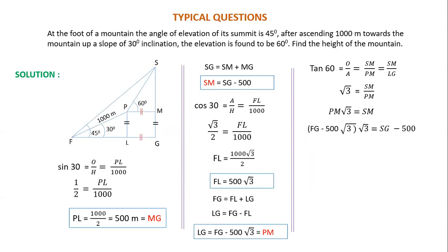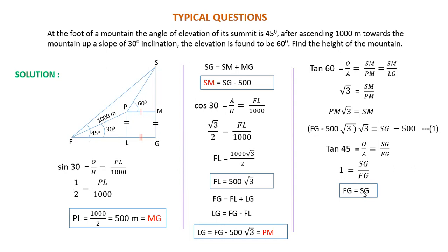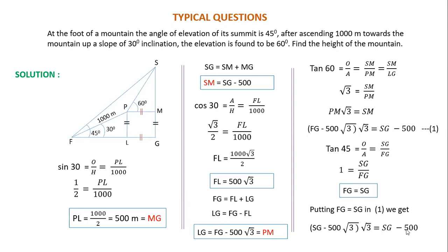Now take the entire big triangle. Tan 45 is opposite upon adjacent — opposite is SG and adjacent is FG. Tan 45 is 1, so SG/FG = 1, meaning FG equals SG. Putting FG equal to SG in the first equation: (SG minus 500√3) × √3 = SG minus 500.